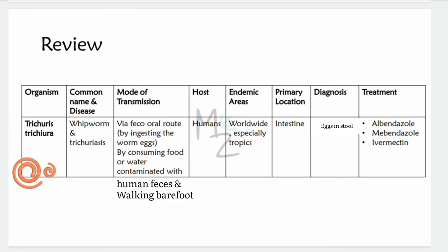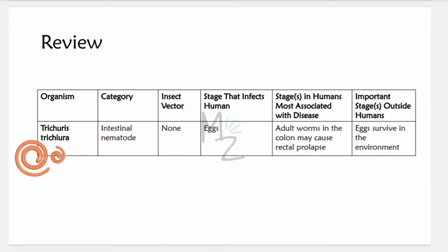To review: the organism is Trichuris trichiura, common name whipworm, responsible for causing trichuriasis. Transmission occurs via the feco-oral route by ingesting embryonated eggs or consuming contaminated food or water, and by walking barefoot on soil. Hosts are humans; egg habitat is soil. Endemic areas are worldwide, especially the tropics. Primary infection location is the intestine. Diagnosis is by finding eggs in stool. Treatment drugs are albendazole, mebendazole, and ivermectin. It is an intestinal nematode with no insect vector. The infective stage is the egg; the disease-associated stage is worms in the colon, which may cause rectal prolapse. Important stages outside humans are eggs surviving in the environment.